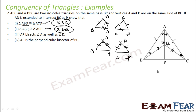Third, AP bisects angle A as well as angle D. AP bisects angle A because angle BAP is equal to angle CAP. As well as angle D — if you see angle D also, this angle is equal to this angle. So in triangle ADA, AP bisects angle D as well.